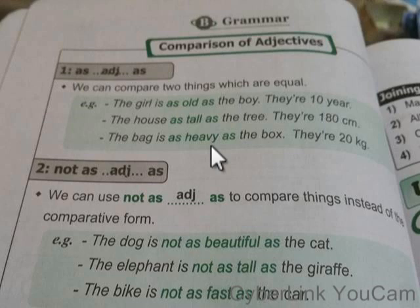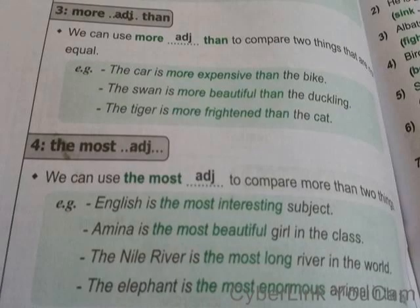الأولى هما equal لكن هنا في اختلاف شوية أو مش متفقين مع بعض. Number one, لما أقول for example: the dog is not as beautiful as the cat — الكلب مش في نفس جمال القطة. The elephant is not as tall as the giraffe — الفيل مش في نفس طول الجراف، هي طبعا أطول كتير. فهنا في اختلاف ما بين الصفات، والوحدة equal تانية — لا، مش متساوين.